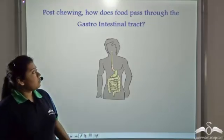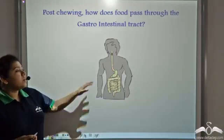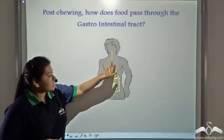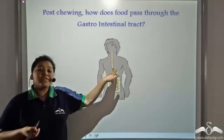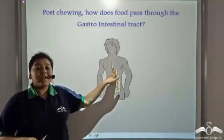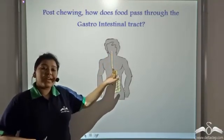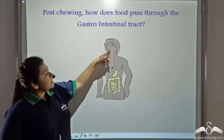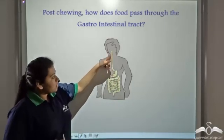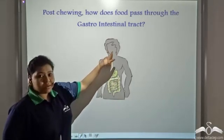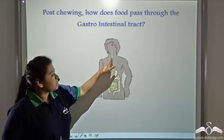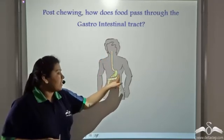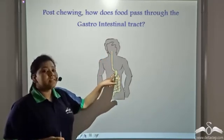Post chewing, how does the food pass through the gastrointestinal tract, which is known as the esophagus? We intake food through our mouth, and then it passes through the esophagus and gets stored in the stomach.